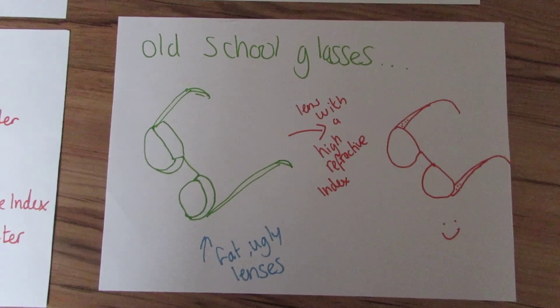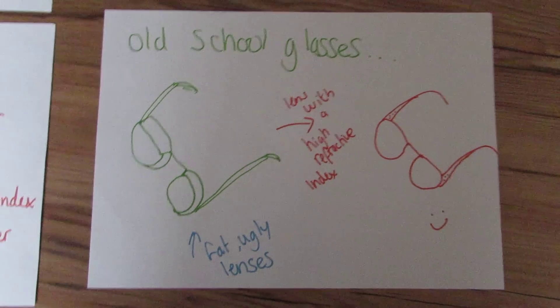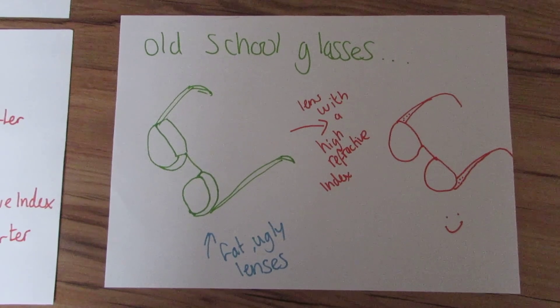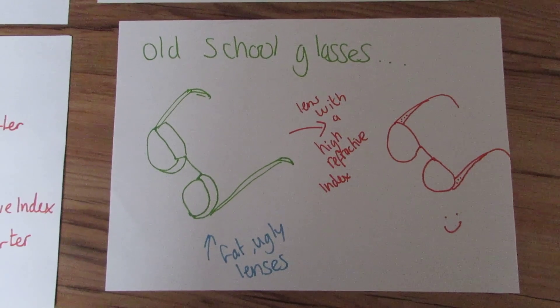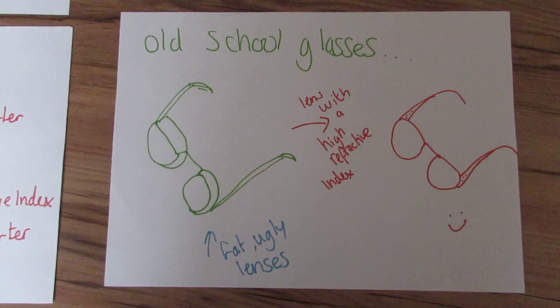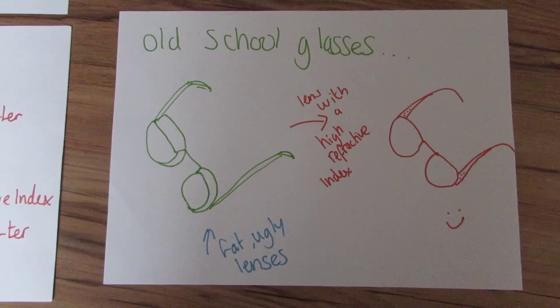Now, you can buy fancy glasses which have a higher refractive index, which have a nice thin frame, a nice thin lens. And this is all because of the advances brought on by physics. It means you can have thin glasses, and nobody will know how bad your eyesight is.